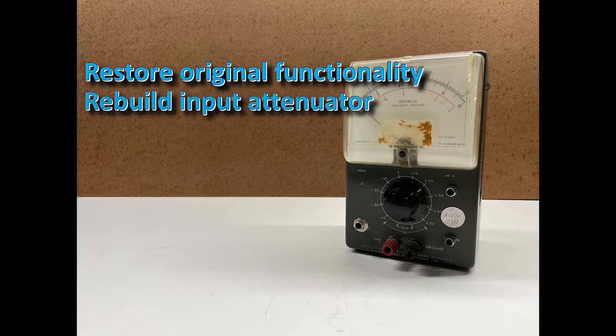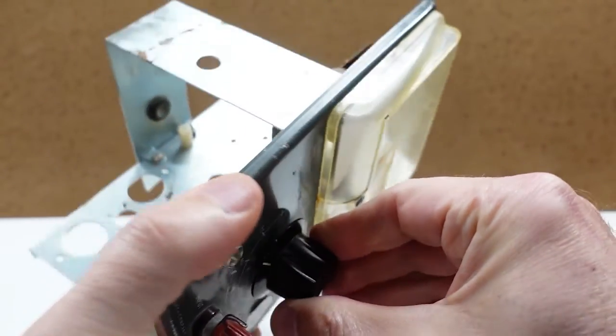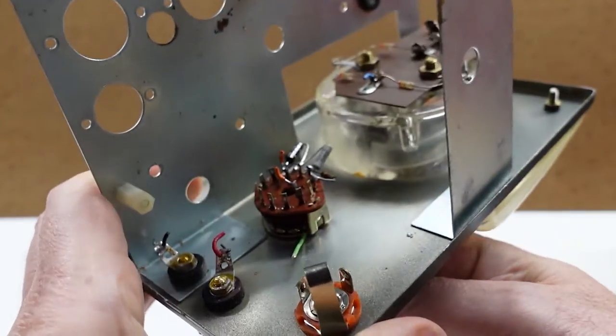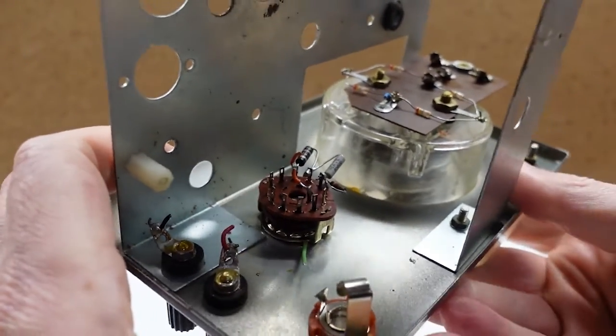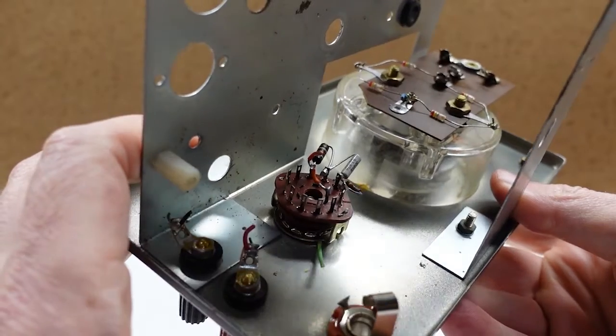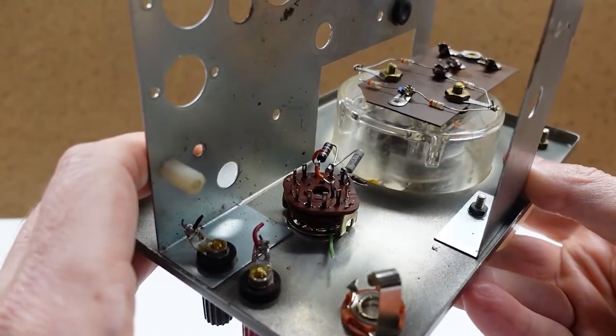Next up is to rebuild the input attenuator. That's necessary in order to get that large of a sensitivity range. Luckily, there's a decent 12-position rotary switch in the unit. I checked it with an ohmmeter and all positions test good. I don't think it's the original, but nevertheless, I think it'll work just fine. And just like the amplifier, I've also got a design in mind for the attenuator, and I'll go through that too in a moment.